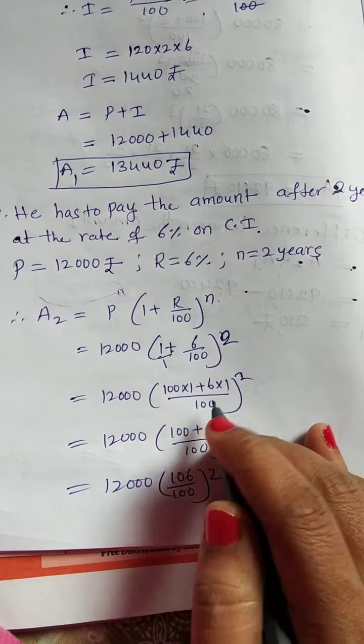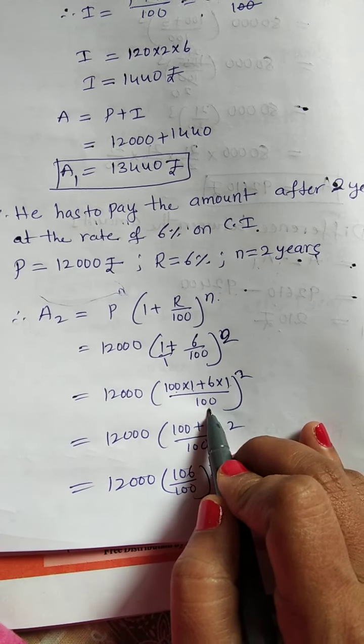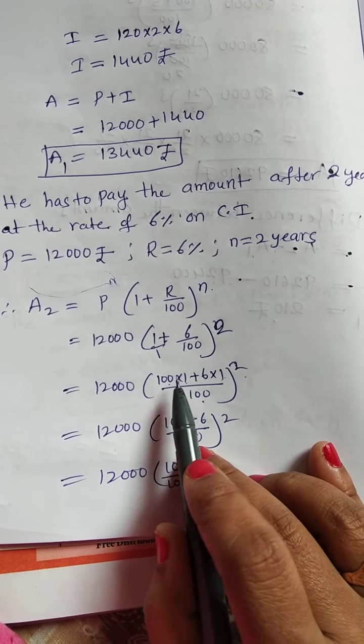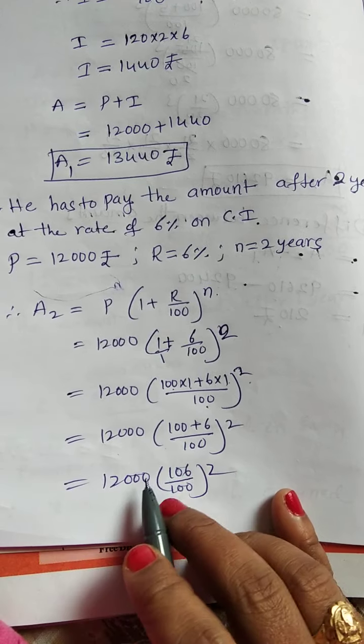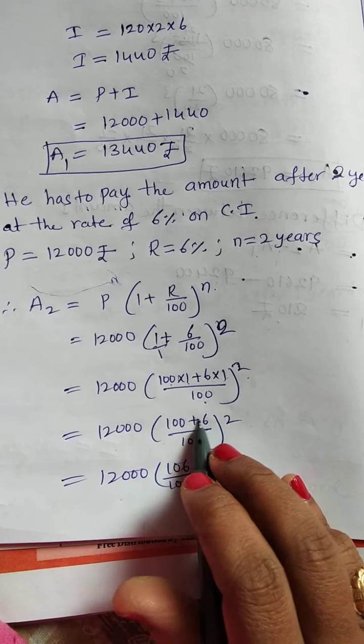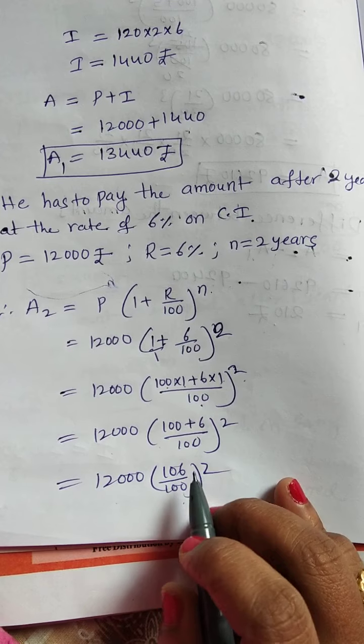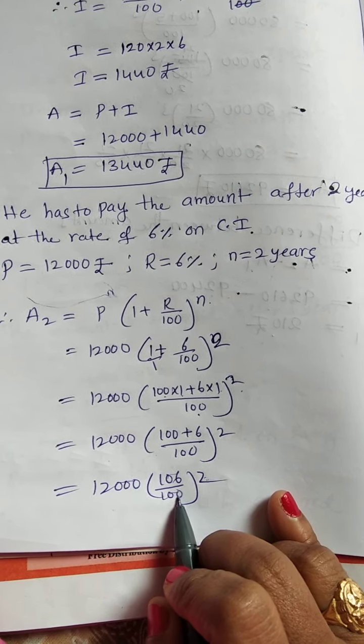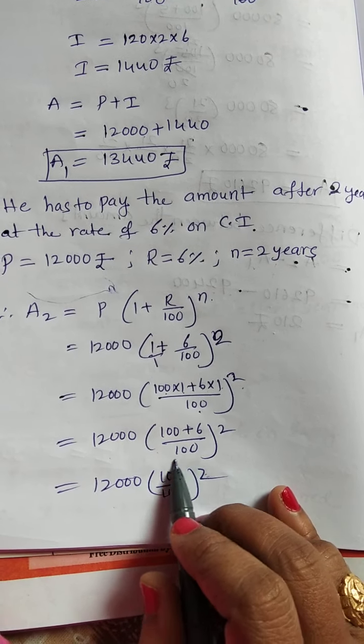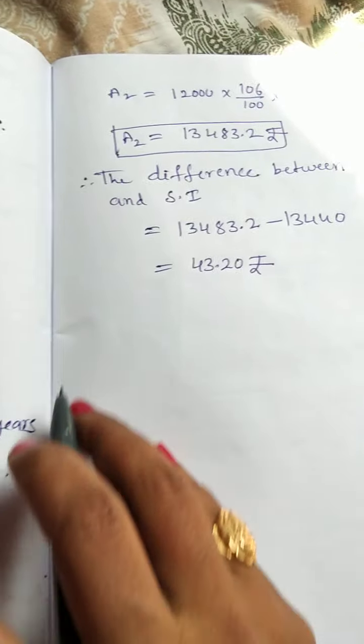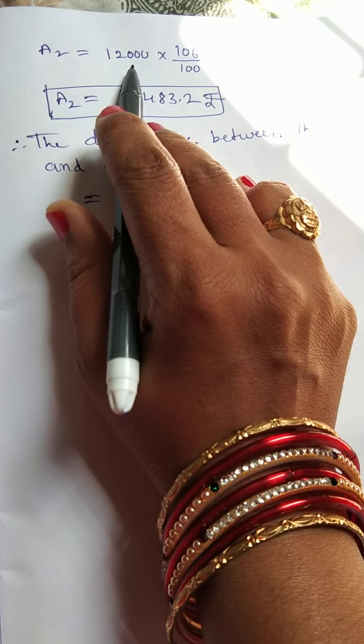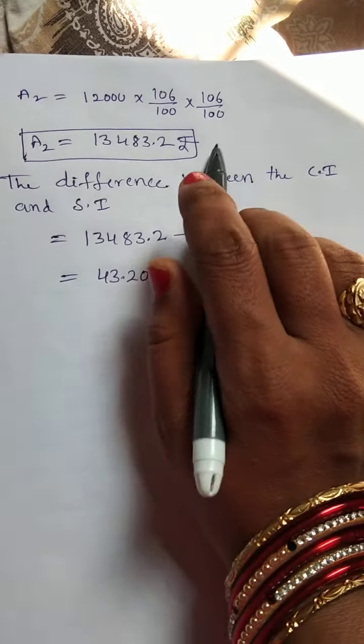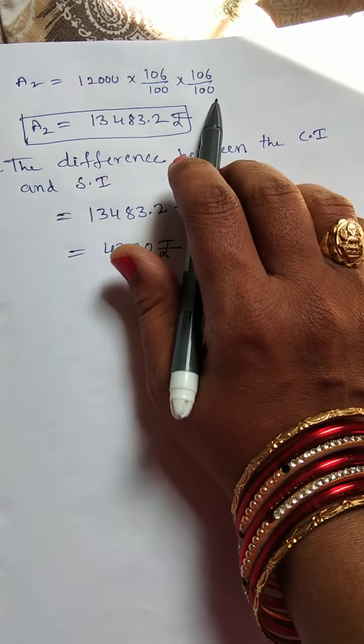12,000 into, here, you can take the LCM. So, 100 into 1 plus 6 into 1 divided by 100 whole power 2. 12,000 into 100 plus 6 by 100. So, 12,000 to 106 by 100. Here power 2 is there. So, this number we should write in two forms, product of two same numbers. A2 is equal to 12,000 into 106 divided by 100, 106 divided by 100.